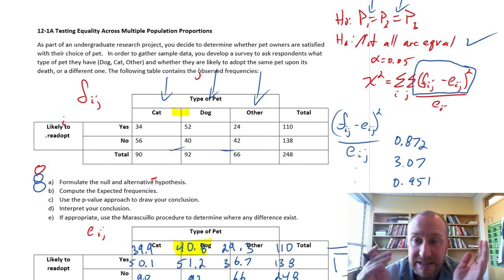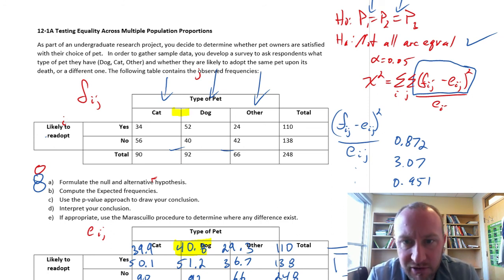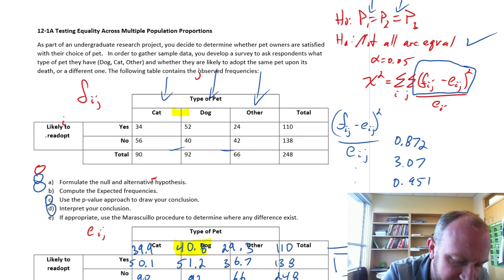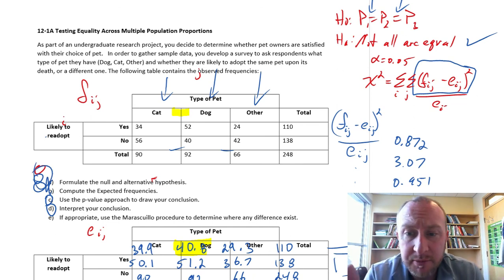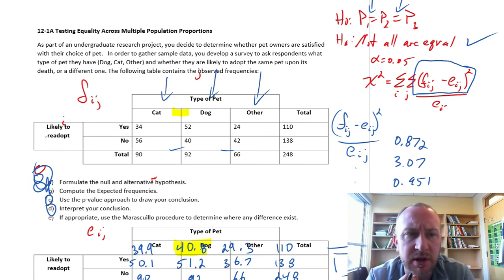So we do have evidence to show that there is a difference in the likelihood to re-adopt the same pet after it's gone. Between at least these three categories, cat, dog, and other. So that's good. We've got C done. We've got D done. And these ones, something moved. So what I'm going to... Where's my time here? Yeah, 18 minutes. So I'm going to do another video. Probably, hopefully, a quick video to do the Marisquilio procedure to identify now where is that difference. We've identified that a difference exists. So now let's find out where that difference is. Okay, so I hope this was helpful. We'll do a couple more anyways, just for practice. Okay, thanks for watching. We'll get to part E very soon. Bye-bye.